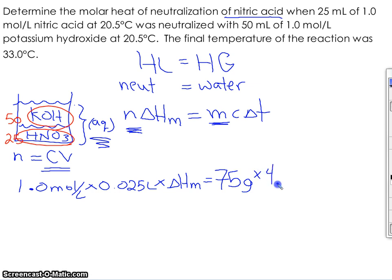Specific heat capacity we assume to be the same as water, 4.19 joules per gram degree Celsius. And the temperature change, 33 minus 20.5, is 12.5 degrees Celsius. I do the math and I find out that ∆Hm is equal to negative 157 kilojoules per mole.